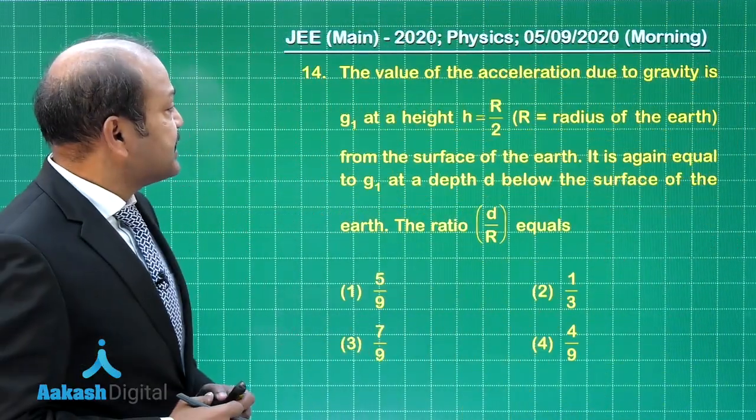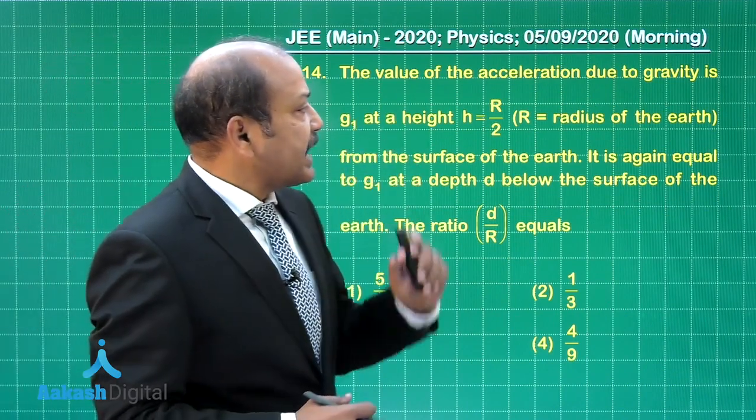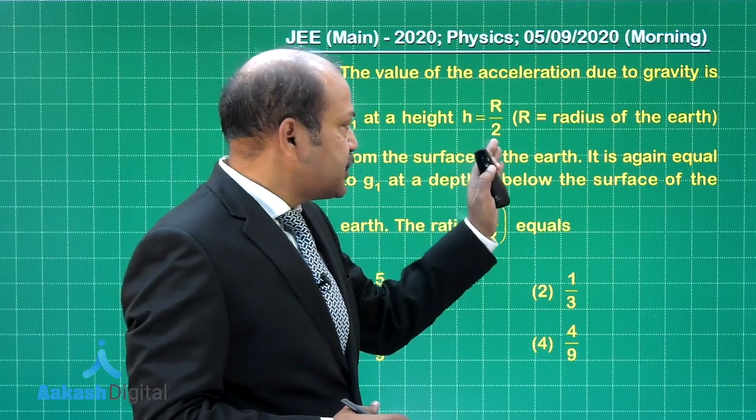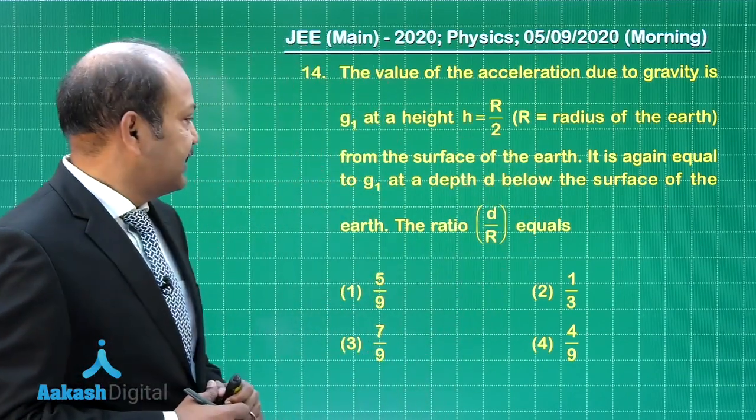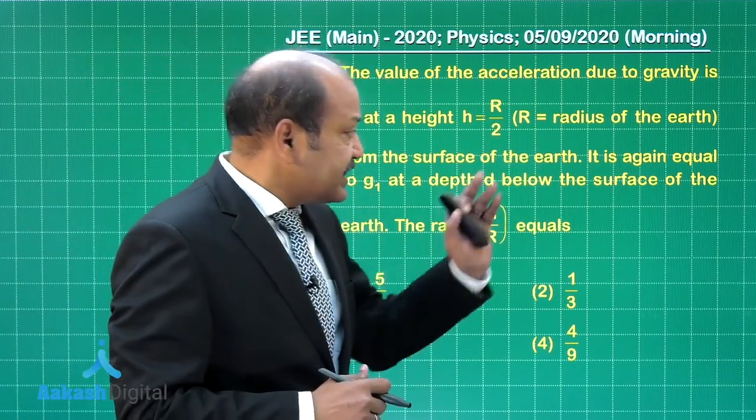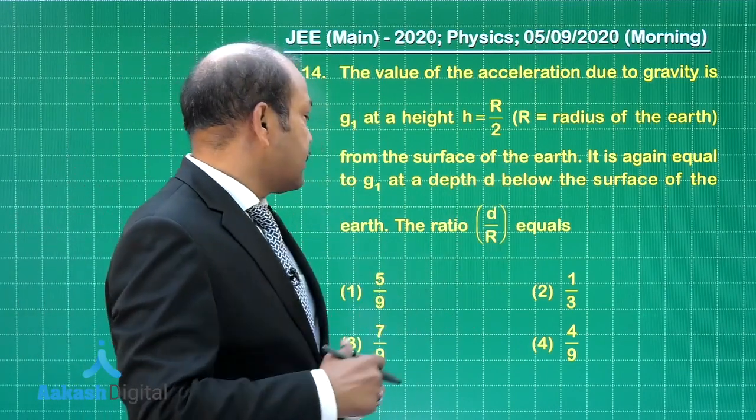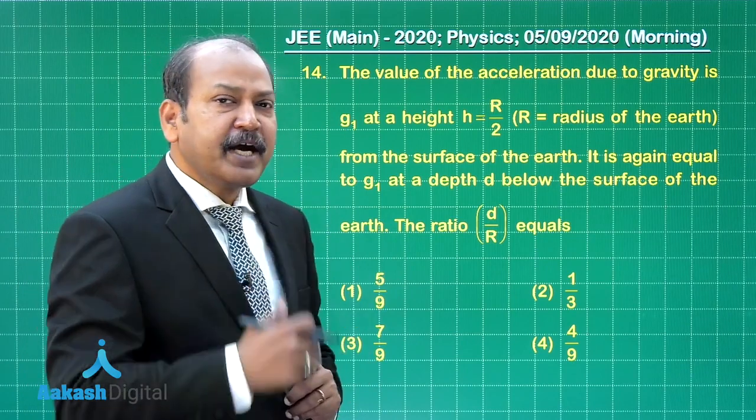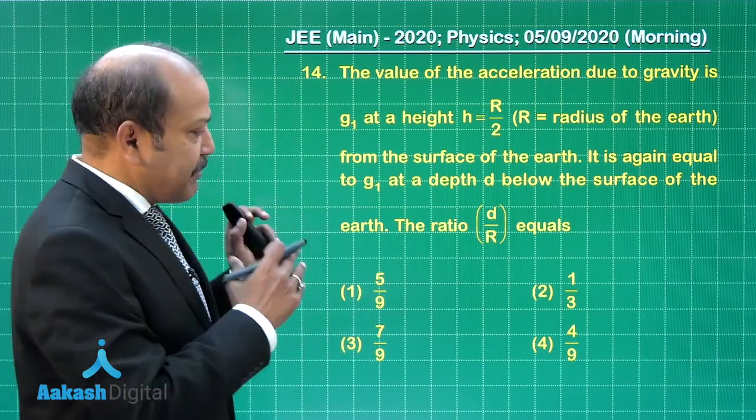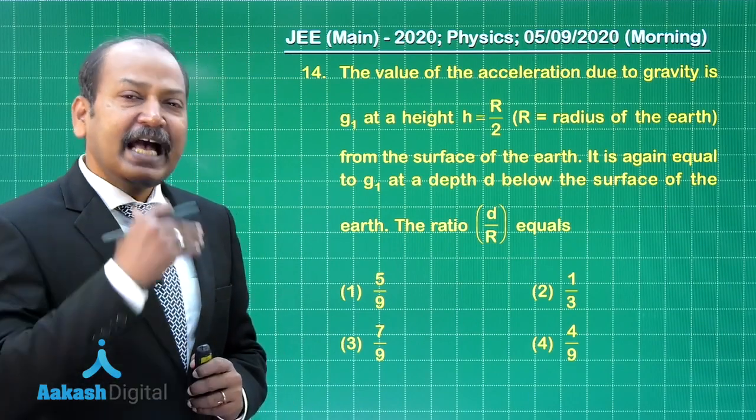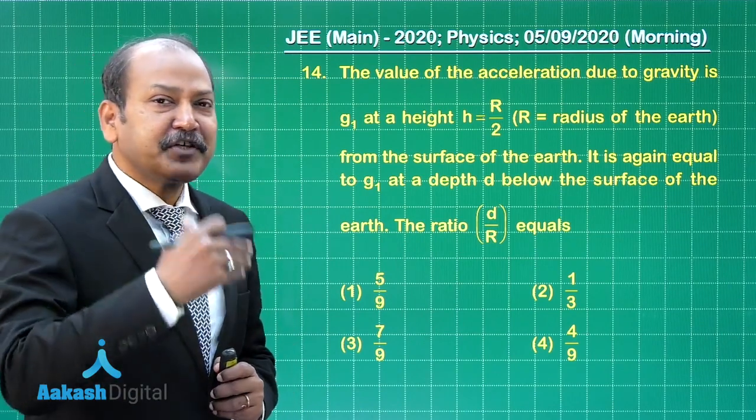Question 14 says the value of the acceleration due to gravity is g1 at a height h equal to r by 2, where r is the radius of the earth, from the surface of the earth. It is again equal to g1 at a depth d below the surface of the earth. The ratio d by r equals... A pretty easy one. The question is related to gravitation and variation of g.